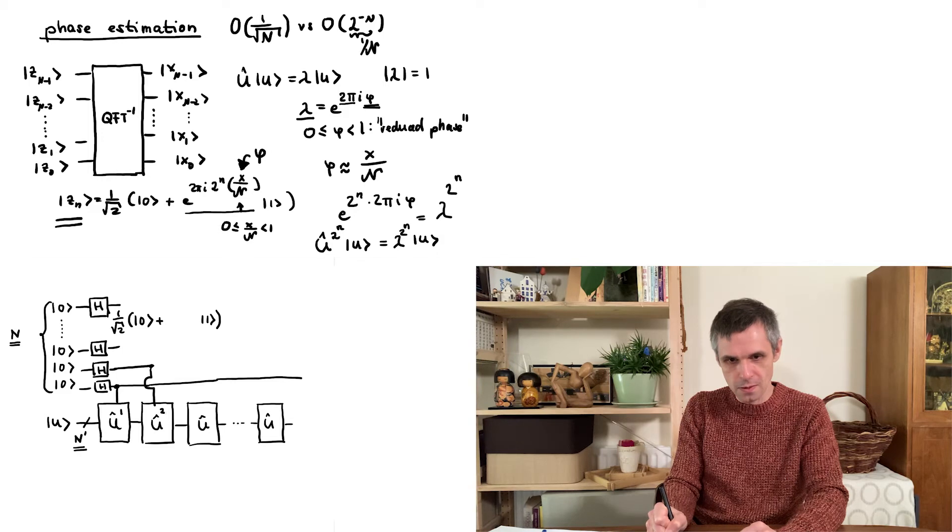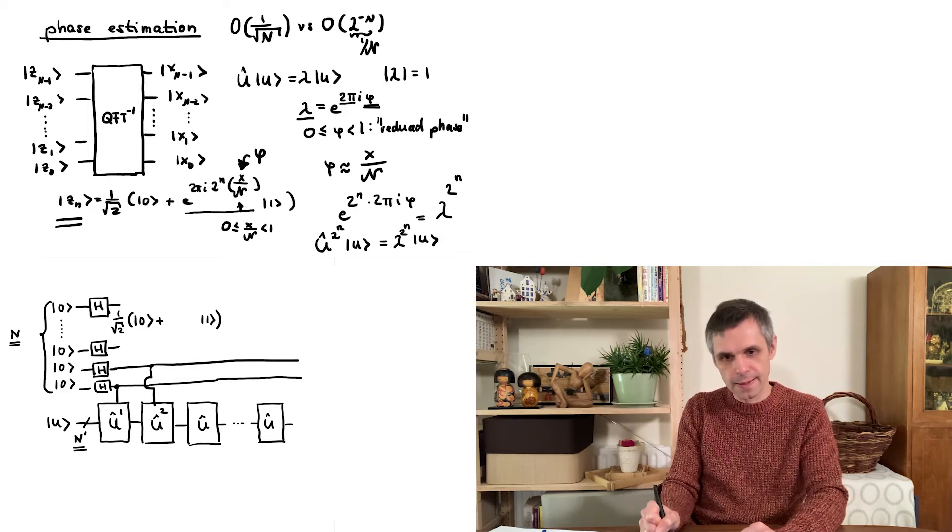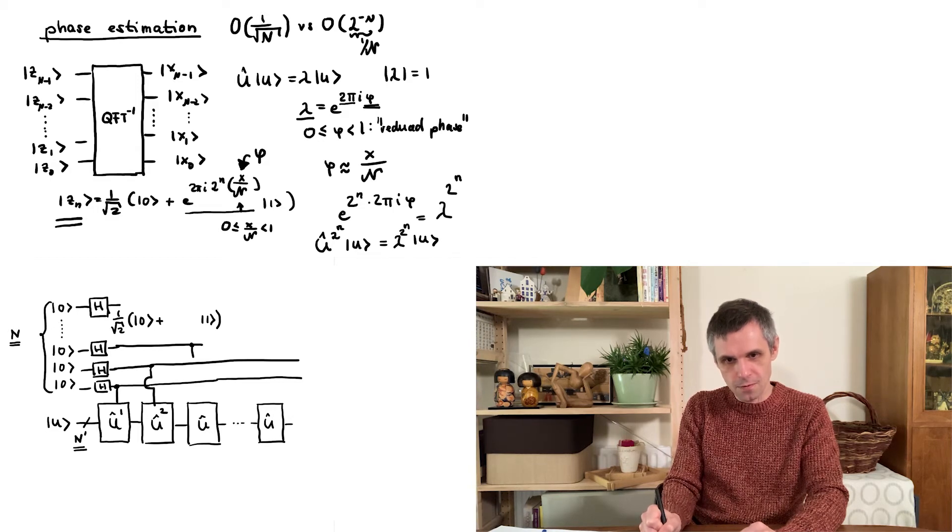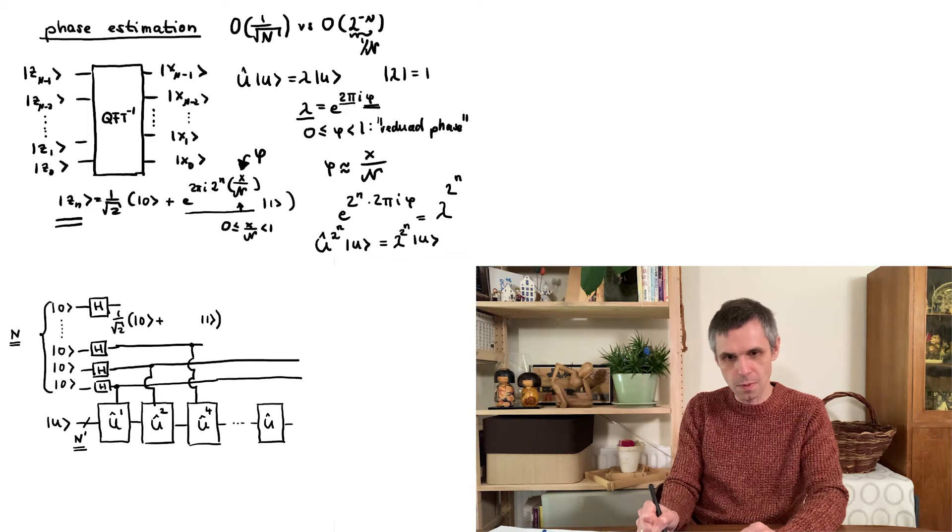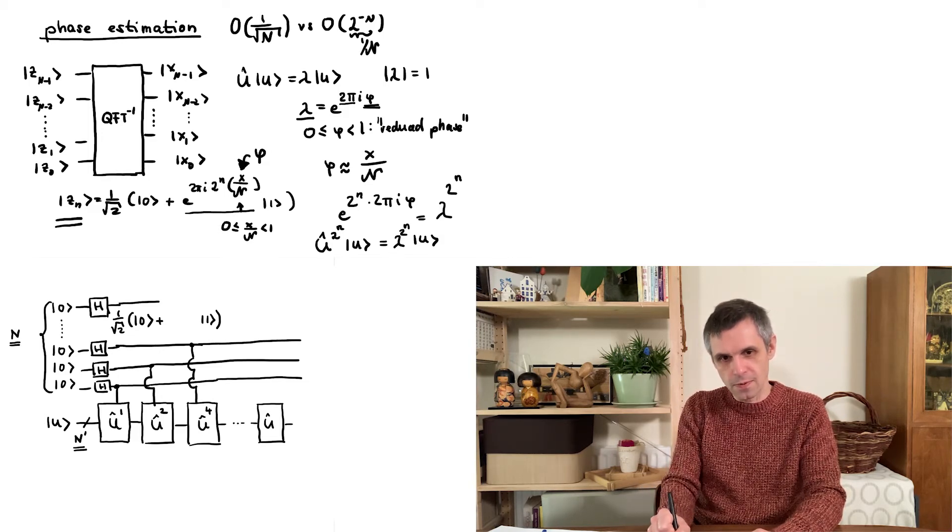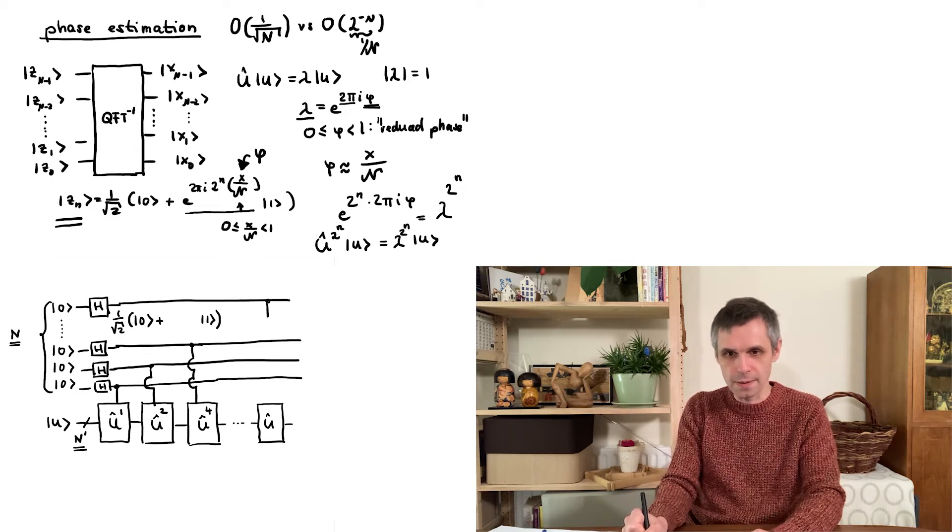So this is really u squared. And on this quantum bit, we apply it four times. So this is u to the power of 4. And to this one here at the very top, we indeed applied 2 to the n times.